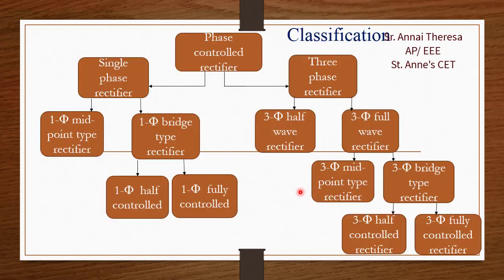Now let's look at the classifications of phase controlled rectifiers. Basically, they are classified into two types: single-phase rectifier and three-phase rectifier. The single-phase type is further classified into single-phase midpoint type and single-phase bridge type. The bridge type is classified into single-phase half-controlled (also called semi-converter) and single-phase fully controlled. The three-phase rectifier is classified into three-phase half-wave and three-phase full-wave.